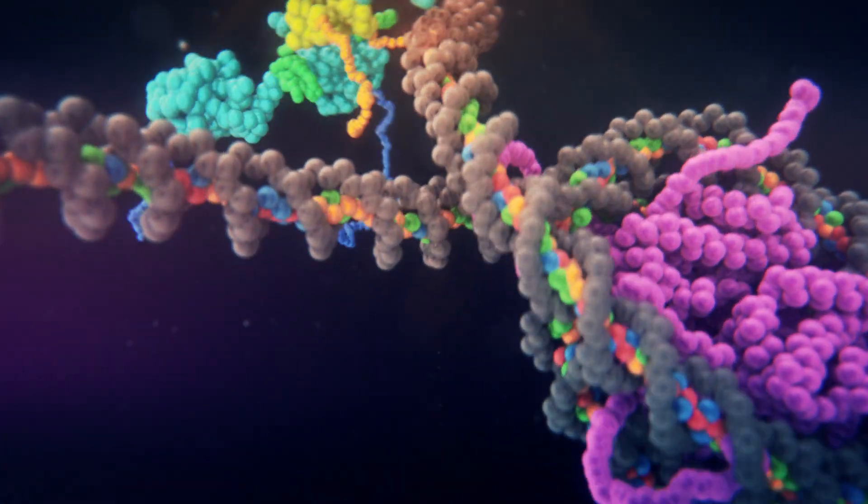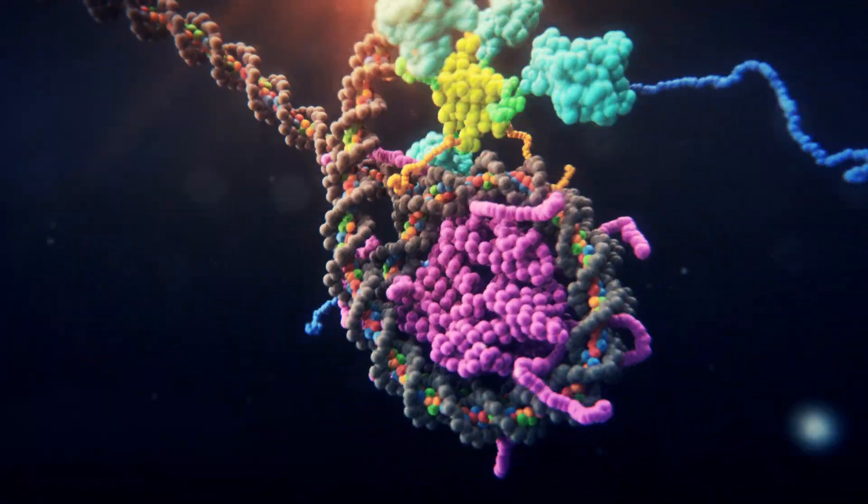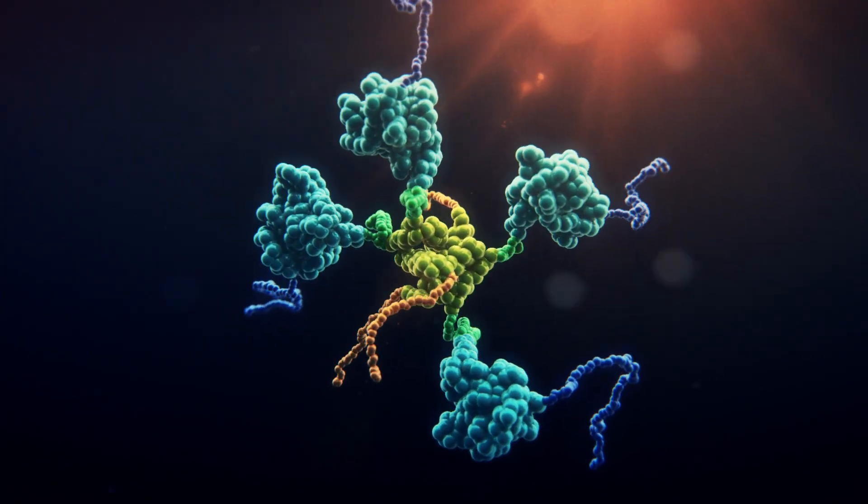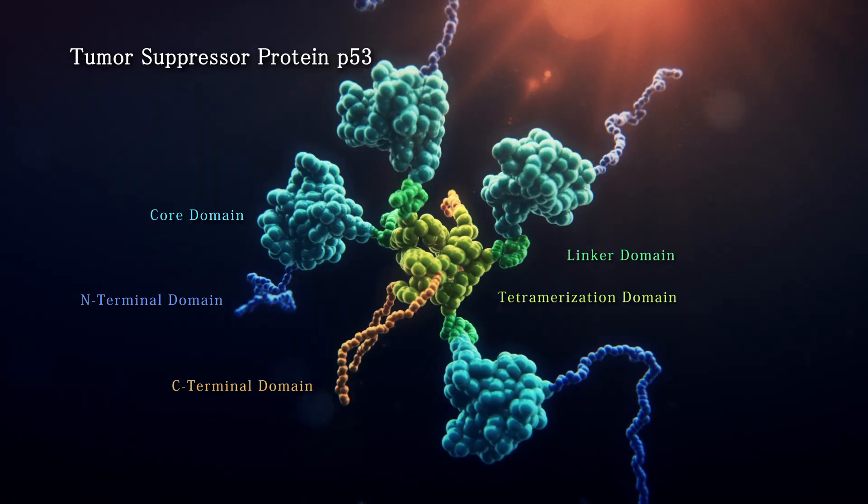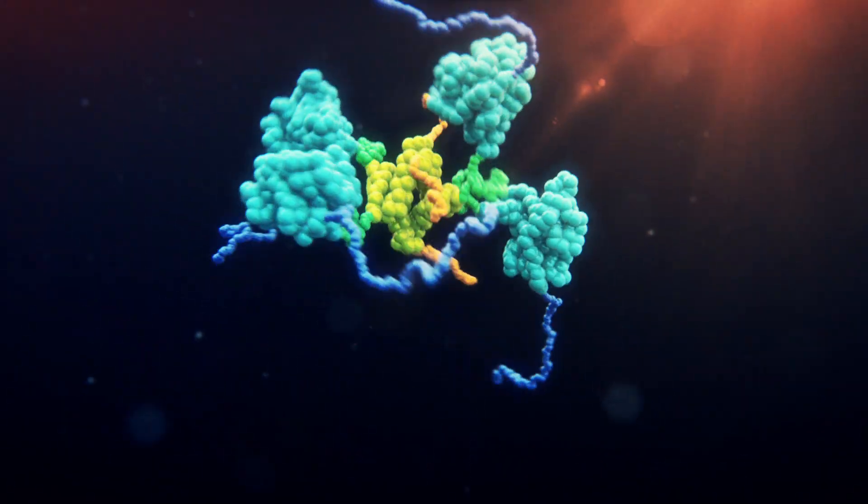The DNA has to unwrap from the histone proteins to allow other proteins to read its genetic information. Here, the tumor suppressor protein, called P53, is about to bind to the DNA.